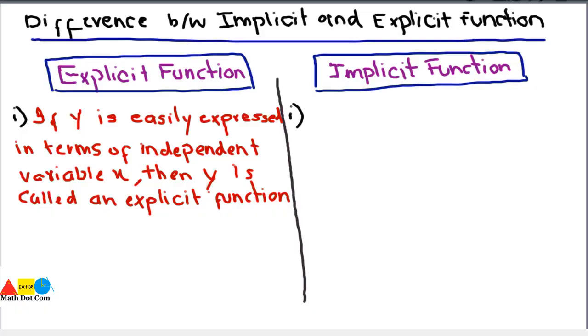Today we are going to discuss the difference between two types of functions: the implicit and the explicit function, and how they differ from each other. First we will discuss their definitions, then we move towards examples that differentiate both these functions from each other.